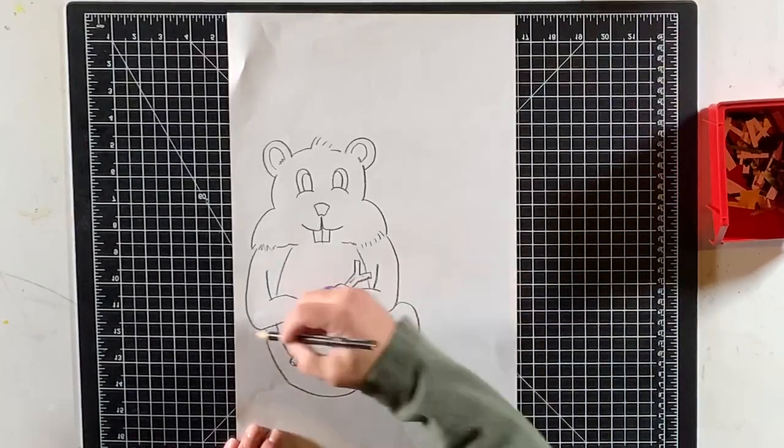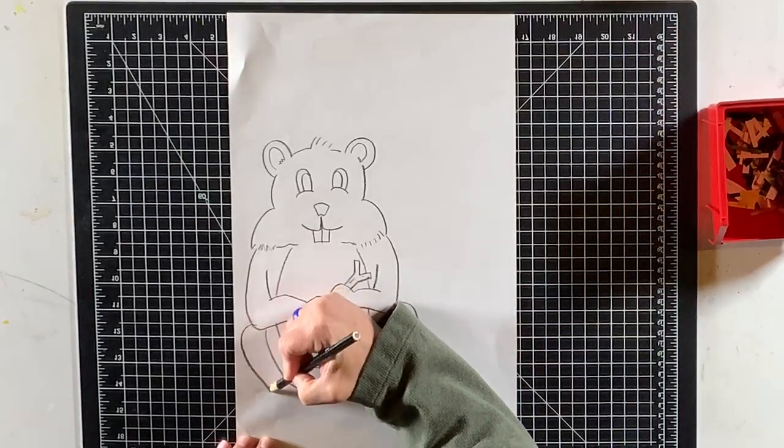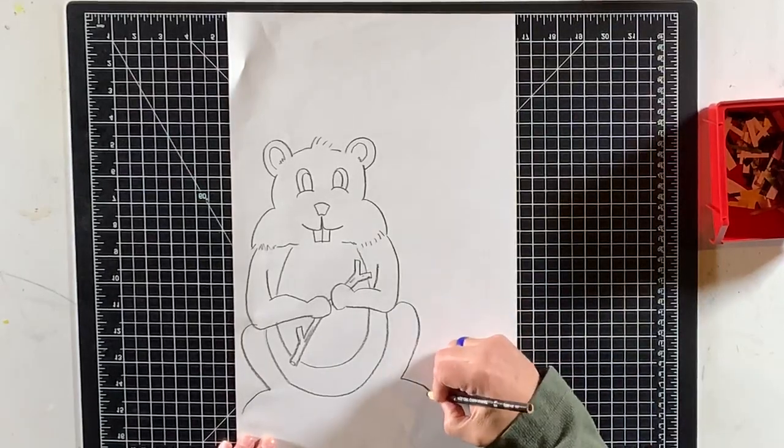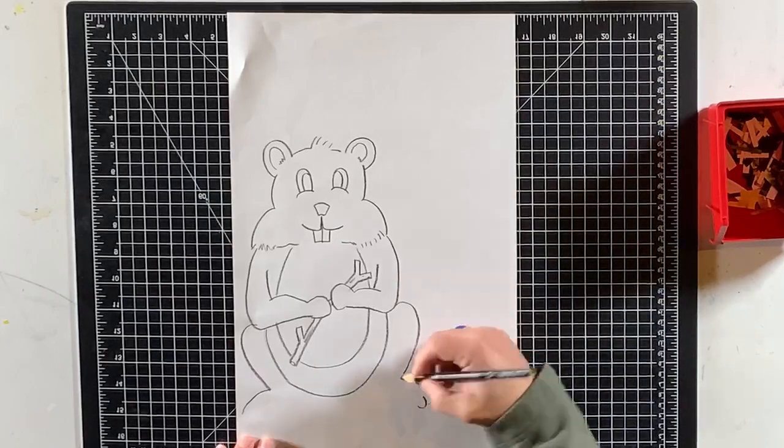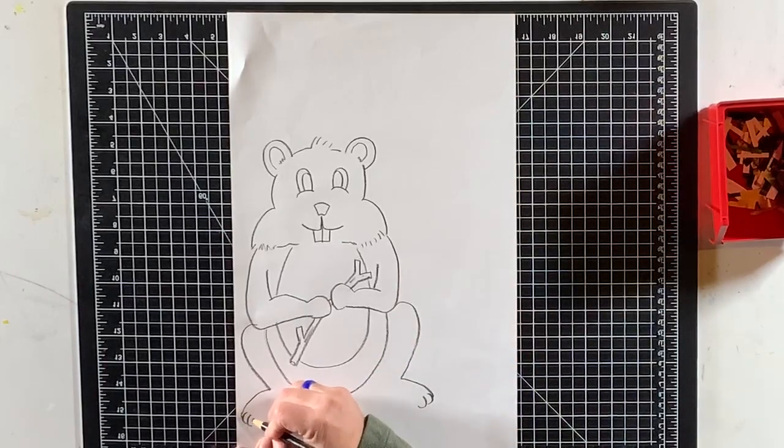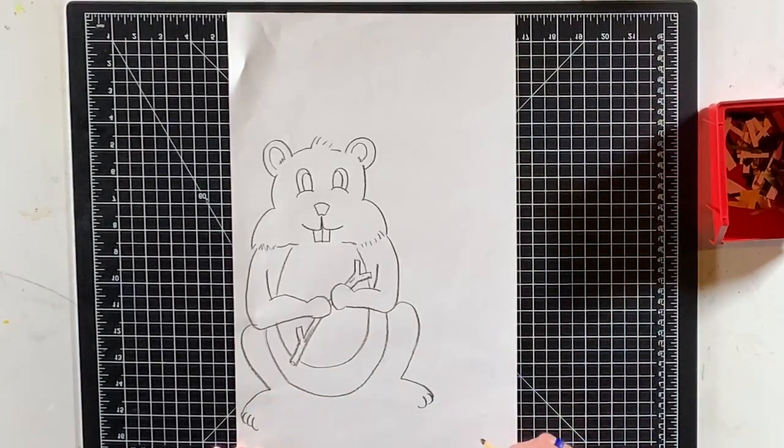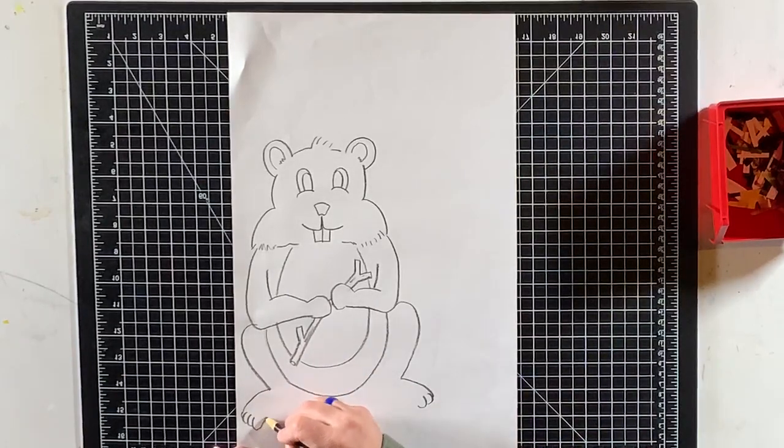And here we go, we've got some little beaver legs. Look at this, it kind of looks like we're making a two and a backwards two. Can you believe that? That's all it takes to make a happy little beaver. Oh my goodness boys and girls, can you believe how quickly our beaver is shaping up?